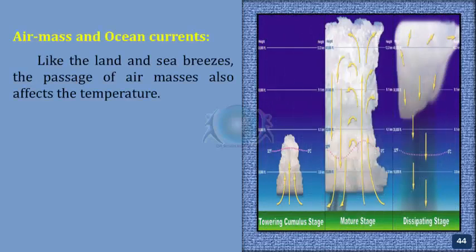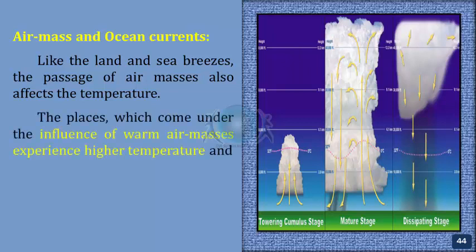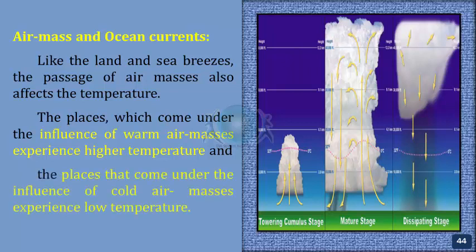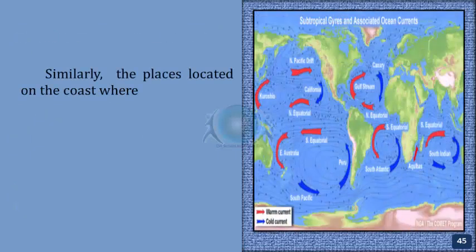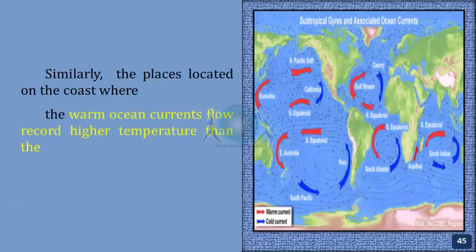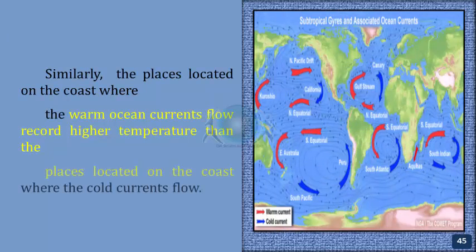Air mass and ocean currents. Like the land and sea breezes, the passage of air masses also affects the temperature. Places which come under the influence of warm air masses experience higher temperature, and places that come under the influence of cold air masses experience low temperature. Similarly, places located on coasts where warm ocean currents flow record higher temperatures than places located on coasts where cold currents flow.